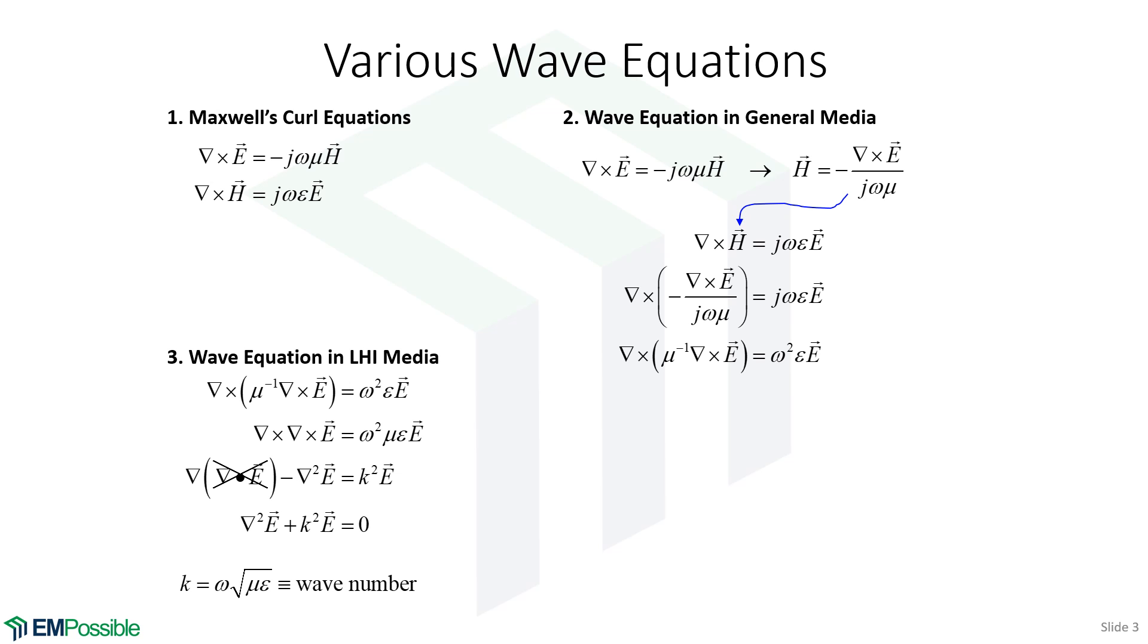But let's say we have something that's linear, homogeneous, isotropic, this wave equation that we just derived. The mu can come to the outside of the curls, it can then come over to the right hand side of the equation, we have this double curl, and we eventually whittle that down to a single wave equation that we can solve. But that's specific to linear homogeneous isotropic media.